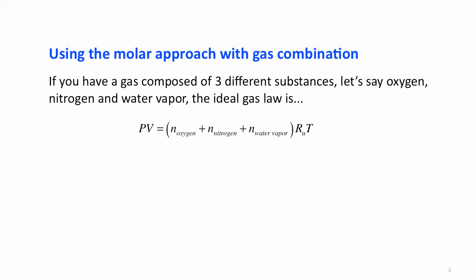The ideal gas law can be written as PV equals the sum of the moles of each of the different gases times the universal gas constant times the temperature.